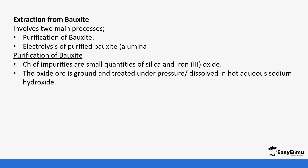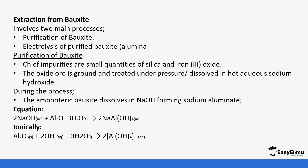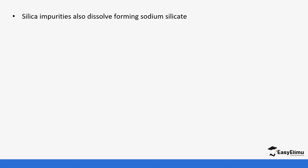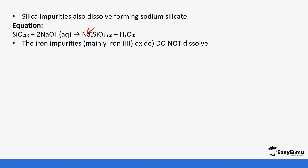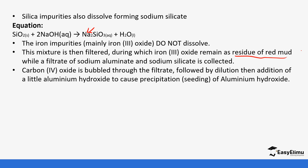The oxide is ground and treated with hot sodium hydroxide. Since aluminium oxide is amphoteric in nature, it reacts with sodium hydroxide to form sodium aluminate. Silica also reacts with sodium hydroxide to form sodium silicate. However, iron(III) oxide does not react with sodium hydroxide, so it remains as a residue — a red mud — and is filtered off.